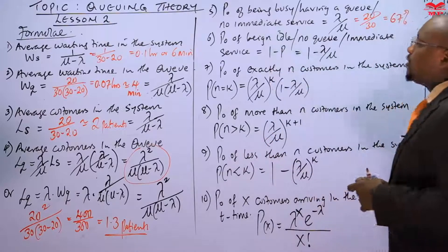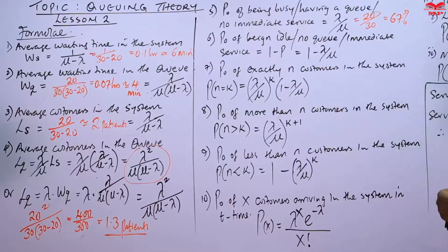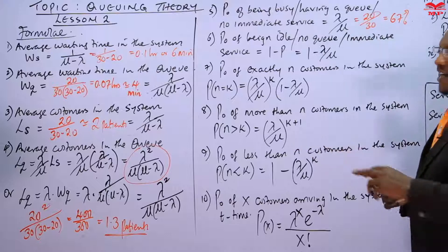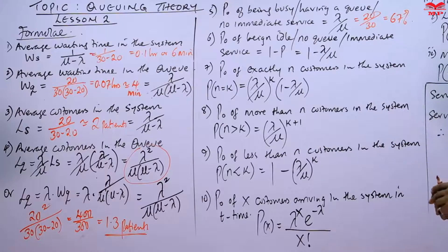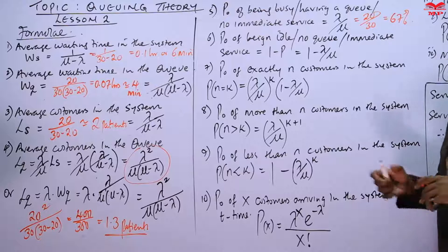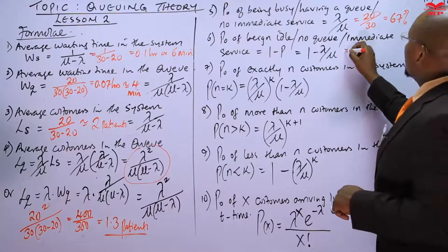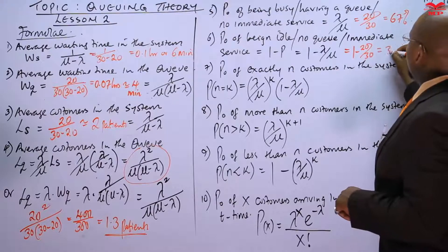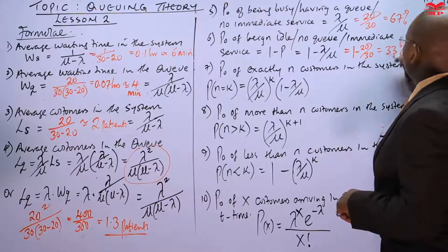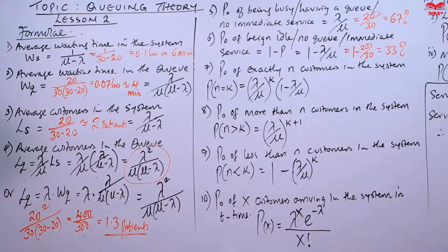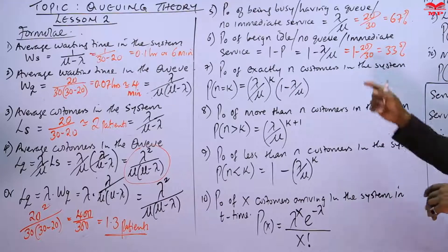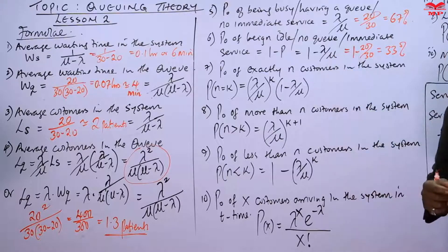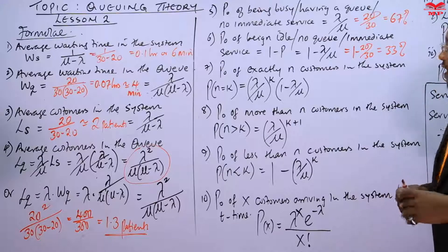So this is the probability of being idle. Dr. Rosemary being idle, or having no queue, or the probability of getting immediate service, is going to be 1 minus the traffic intensity. In our case, 1 minus 20 over 30, which is actually a third — one third of her time she is idle and can see a patient, and a patient can get immediate service. That's a third.